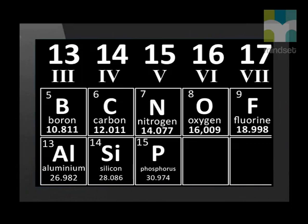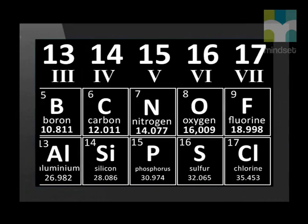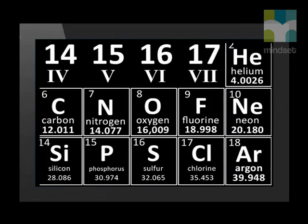The 15th element in the periodic table is phosphorus, represented by the symbol capital P. Sulphur's symbol is capital S and it has atomic number 16. Note that the correct spelling of sulphur is S-U-L-F-U-R. The next element is chlorine — it has the symbol capital C, lowercase l, and has 17 protons. The last element in this row is argon, represented by capital A, lowercase r, with atomic number 18.